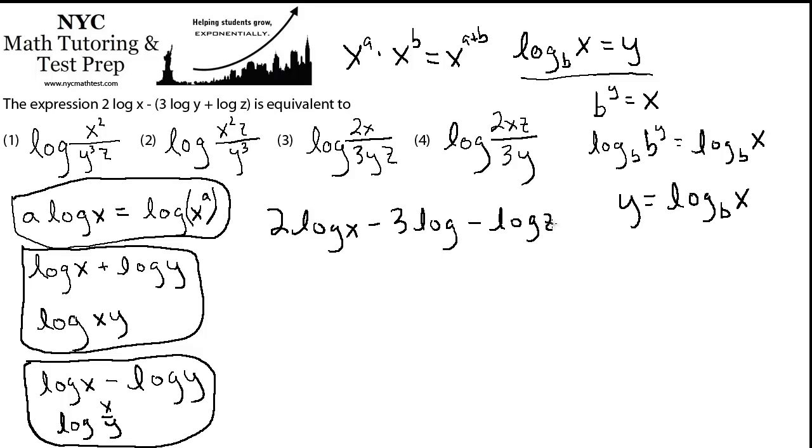We'll get 2 log x minus 3 log y minus log z. And now, I'm going to use the first rule that we stated to make these coefficients exponents on the things that we're taking the log of. And I missed the y here. So this is log y. Log of x squared, right? I'm making the 2 an exponent of the x minus log of y cubed. Same idea. And here, we just still have log of z because there's no coefficient.